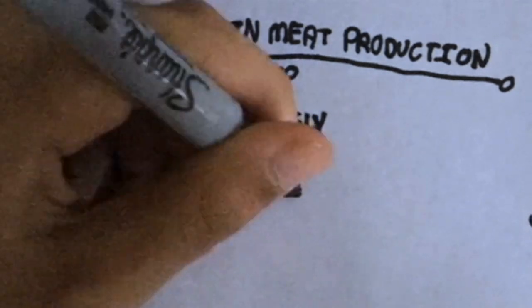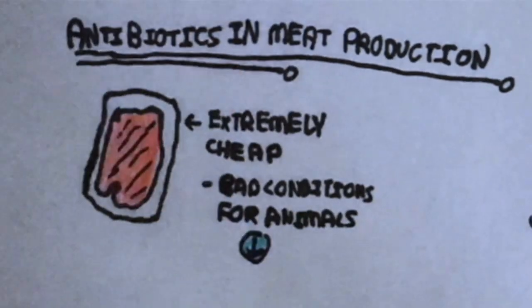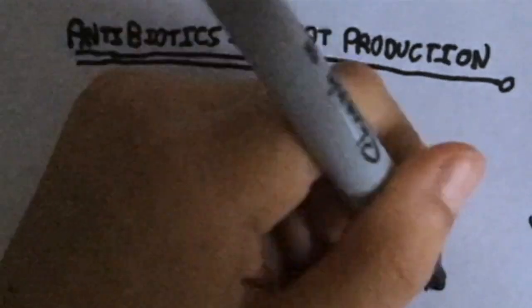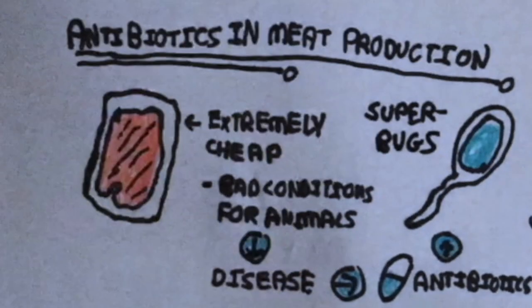In order to make meat production cheaper, livestock are held in horrific conditions in extremely close quarters, making it a breeding ground for disease. Therefore, animals are given cheap antibiotics to keep them protected from infection, giving superbugs to humans.